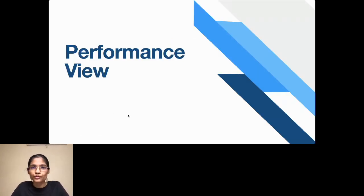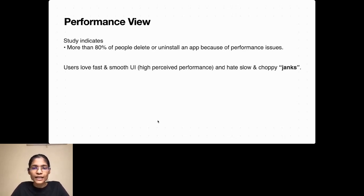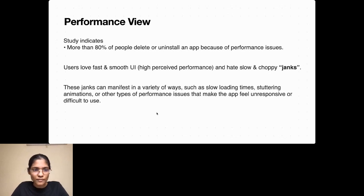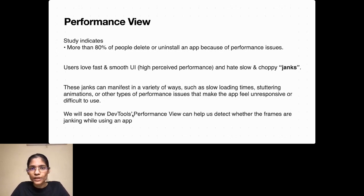Now let's move to the second DevTool: Performance View. Studies indicate that more than 80% of people simply delete or uninstall their app because of performance issues. Users love fast and smooth UIs and hate janking. Janks can occur due to slow loading times, stuttering animations, or other performance issues that make the app feel unresponsive. We'll see how to use the Performance View to detect whether frames are janking while using an app.